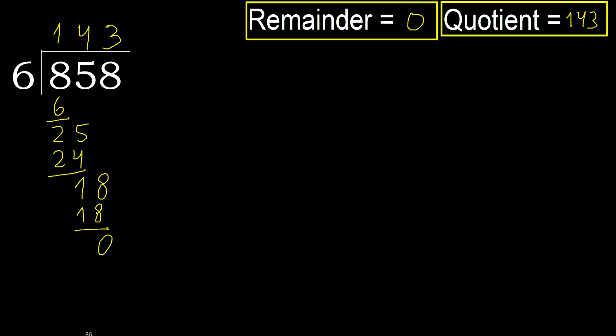Okay, 0 remainder, therefore 858 divided by 6 is 143.